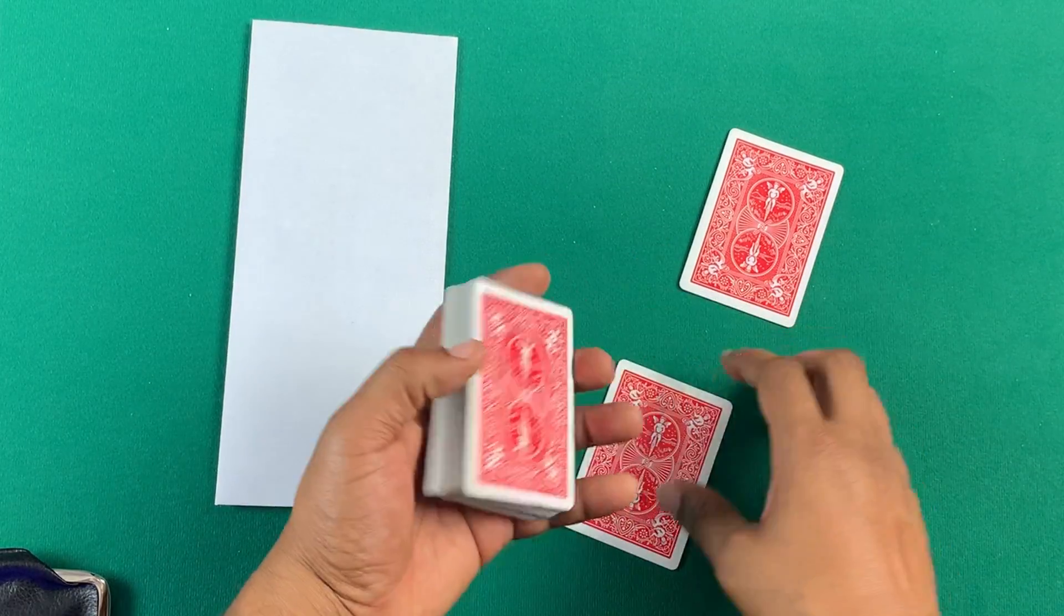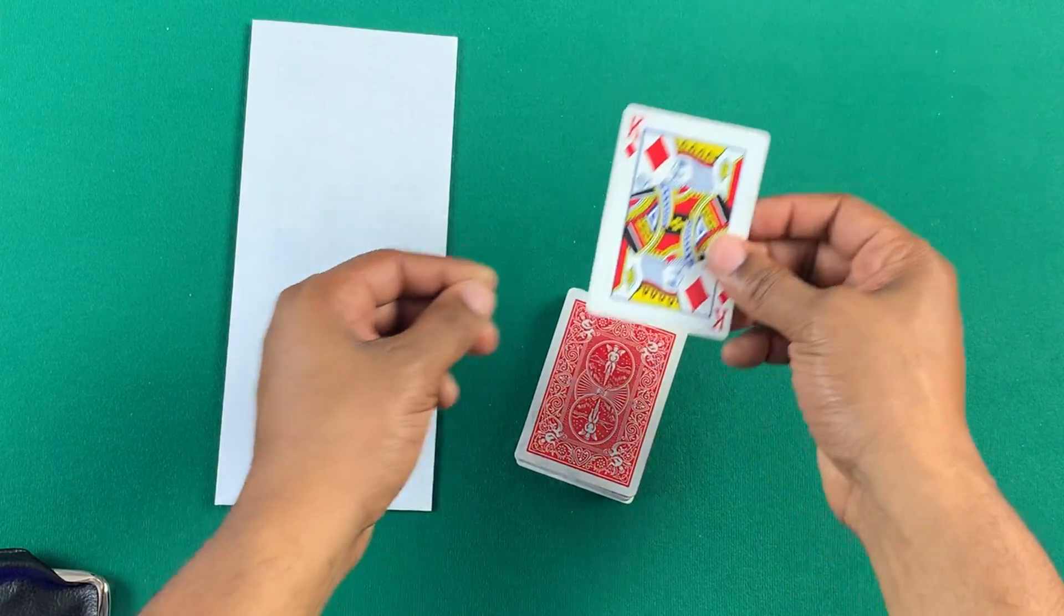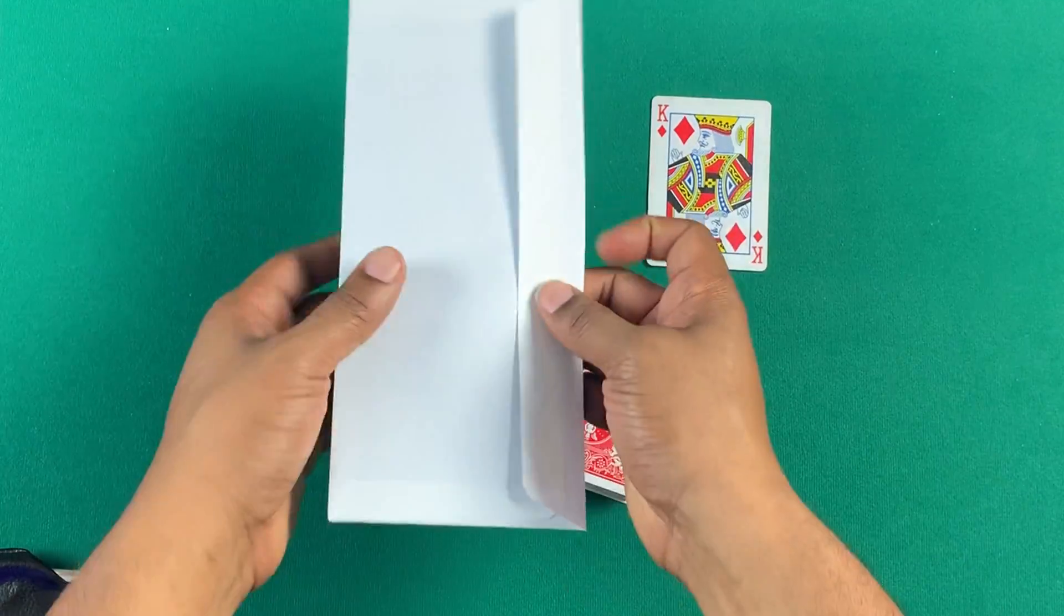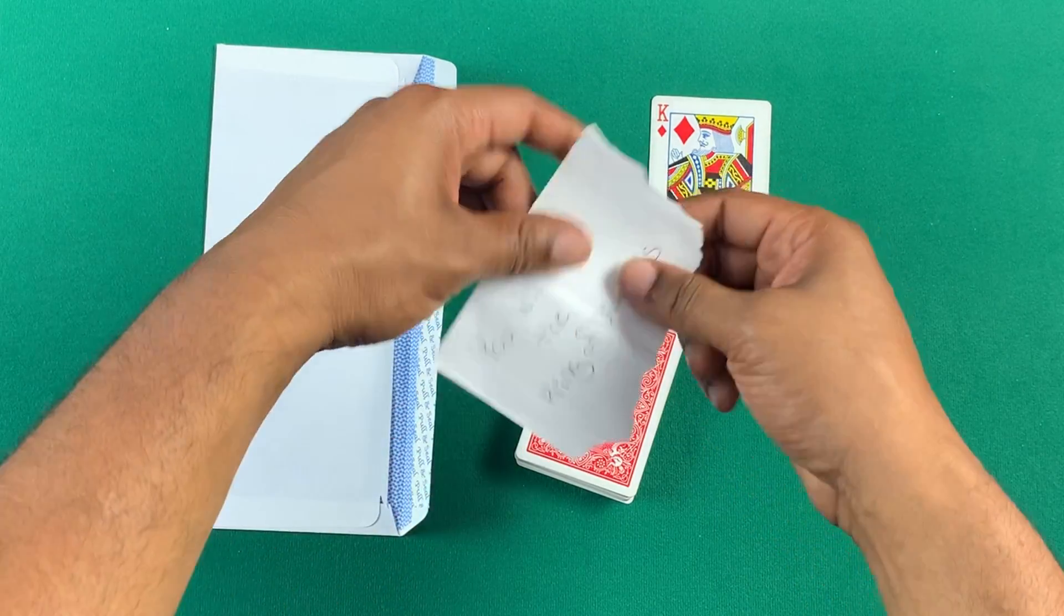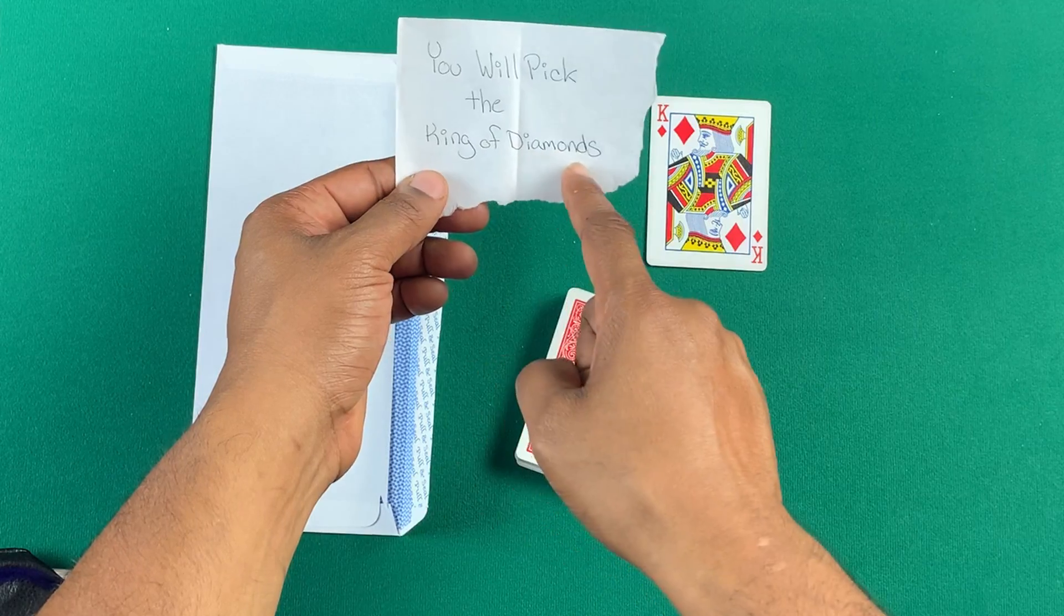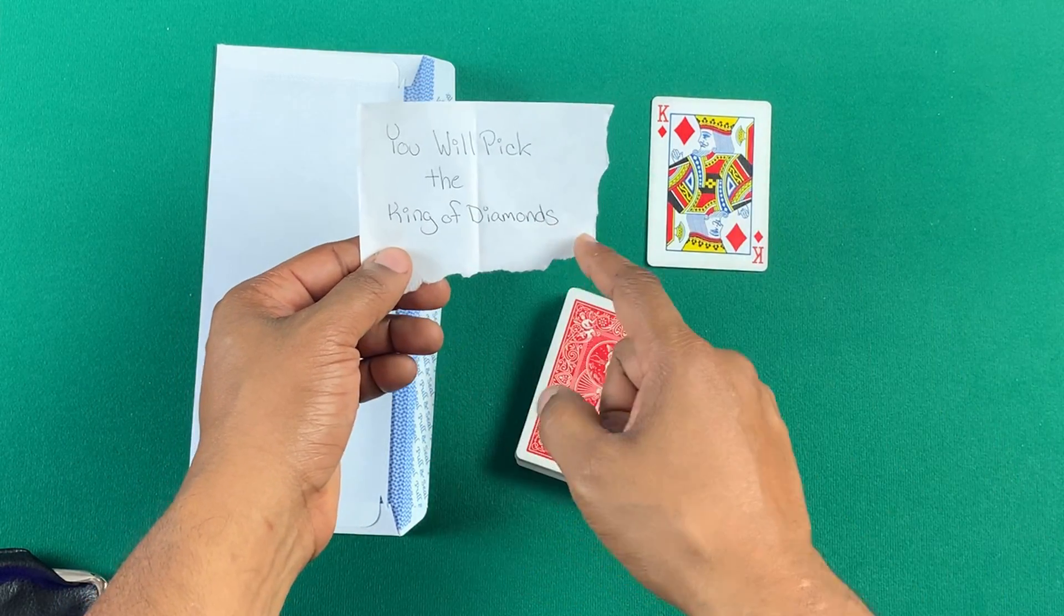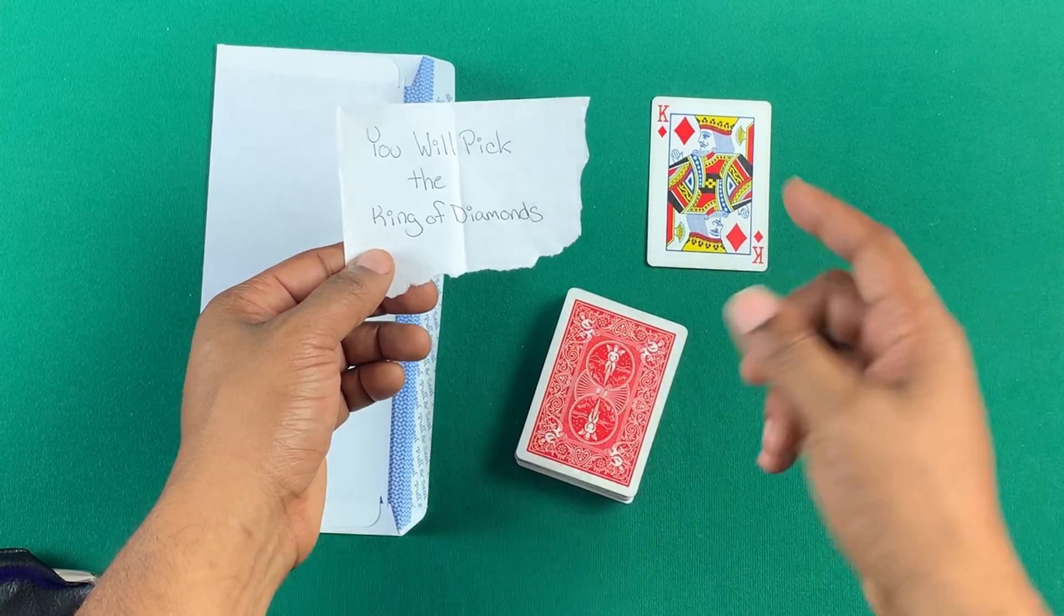You're going to take a deck of cards. It doesn't matter what type of deck of cards you have. But you're going to take the king of diamonds or whatever your prediction is going to be. You're going to take that predicted card out. You're then going to go and get a piece of paper. And you're going to write on a piece of paper. You will pick the, my card's the king of diamonds. So, I pick king of diamonds. Whatever card you want to force on them, it can be that card. It can be a special card, a different colored back card. However you want to do it.